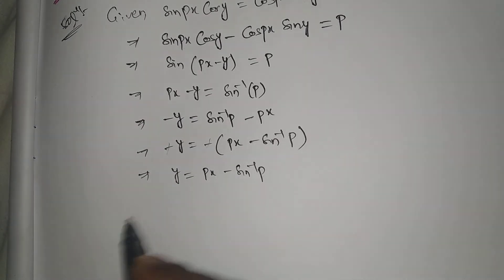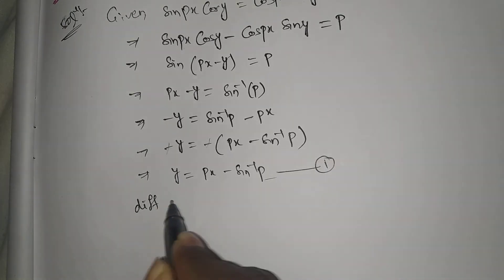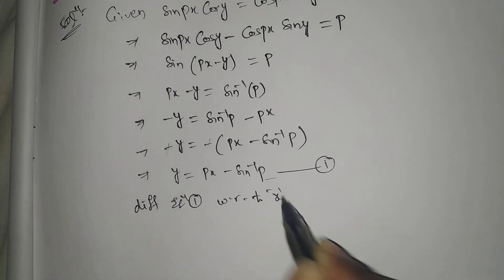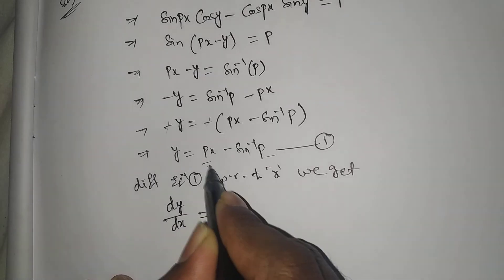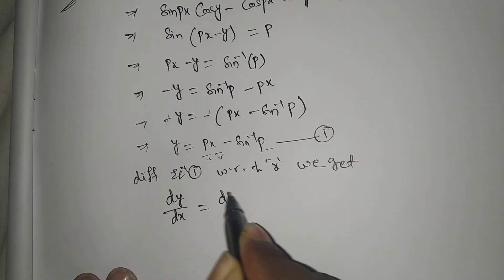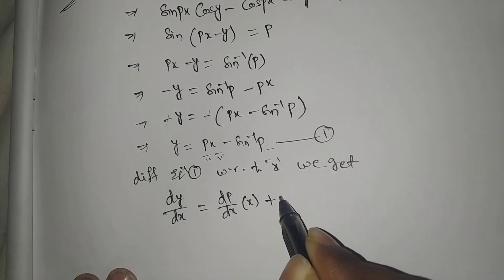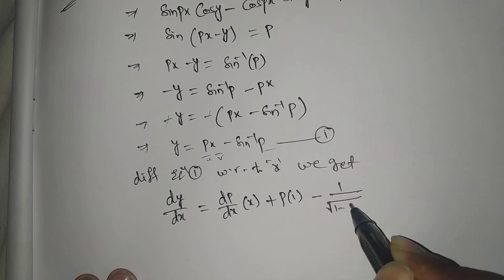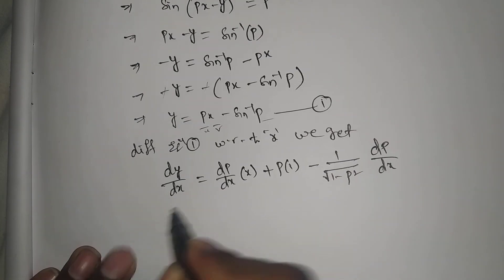This is Equation 1. Differentiating Equation 1 with respect to x, we get dy/dx equal to dp/dx times x plus p minus 1 over root of (1 minus p squared) times dp/dx.